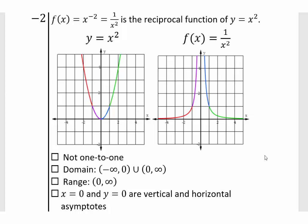Now let's look at the reciprocal function of x squared. Again, we have color coded it and the same principles apply. When you are closer to zero, either on the left or on the right, since all values are positive numbers from both sides, the graph will shoot towards positive infinity. Whereas when x goes to positive or negative infinity, you will have 1 over large numbers, which get smaller and smaller, but from the positive side.